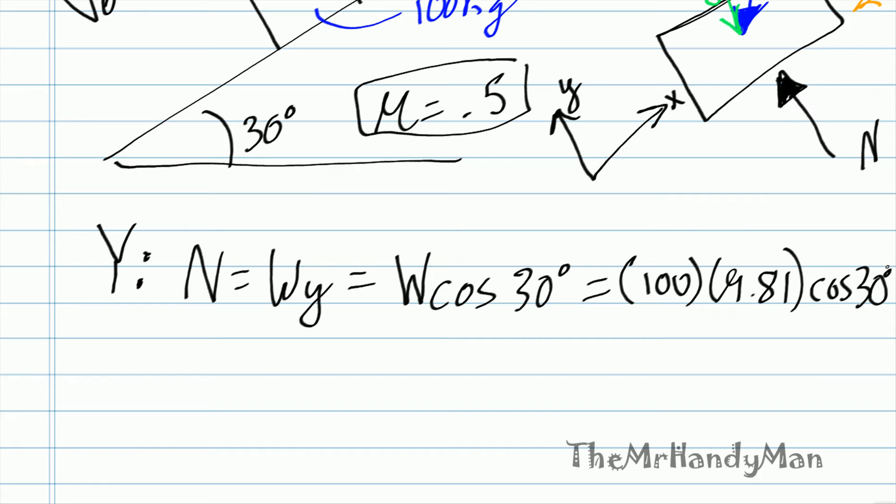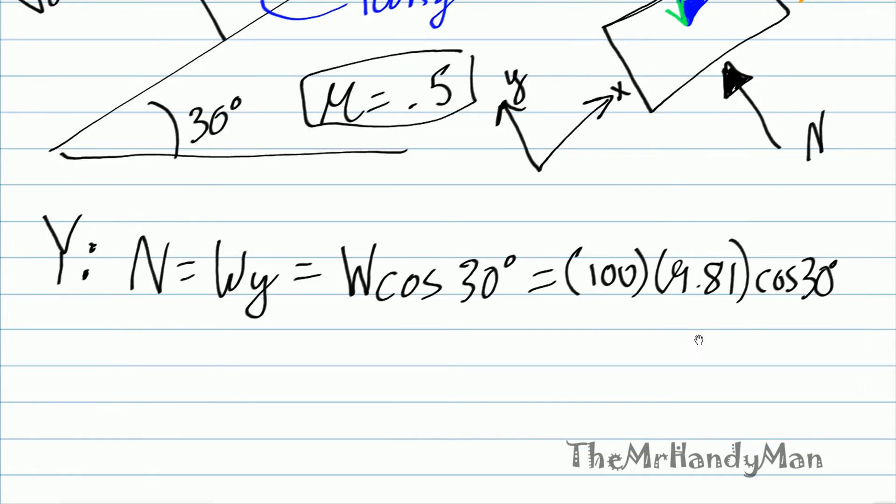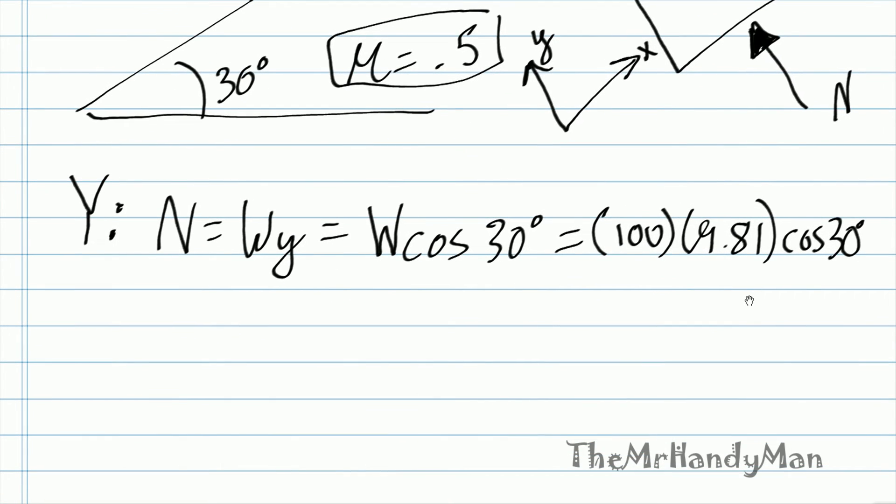So, 100 kilograms times 9.81 times cosine of 30. And when we work that out, we realize that we have 849.57 newtons. And that's our normal force. That's the actual force that's being applied into the ground on the ramp.